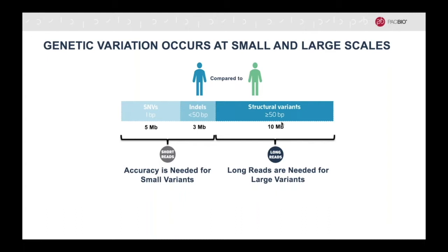To detect the smaller variants like SNVs and indels, high accuracy is needed, and therefore they have traditionally been detected using short-read sequencing. For larger structural variants, where read length is key, long-read sequencing has been applied.